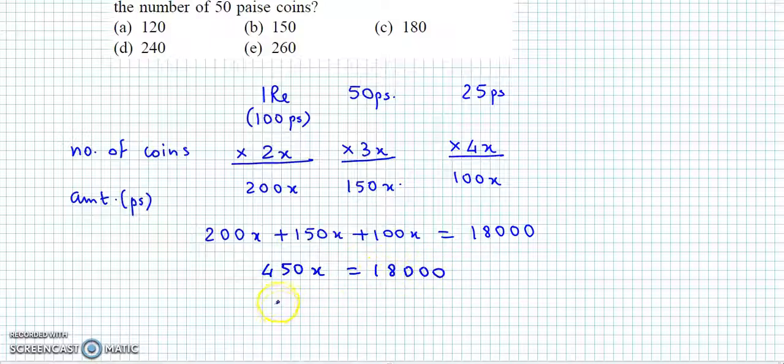18,000. Yahaan se x mil jayega: 18,000 divided by 450. Ek ek zero cut karte. Let us reduce by nine: nine nine five, 45; nine two, 18; ye do zero aur five one, five 40. To